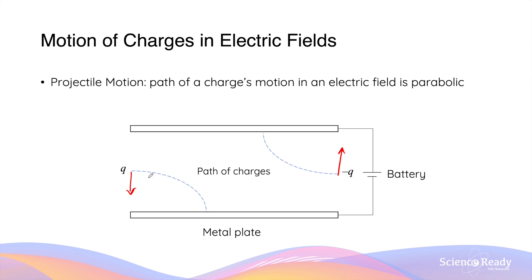This is because the horizontal velocity of both charges — whether moving towards the right or towards the left — remains constant in the absence of any forces, while the vertical velocities, or the vertical components of the velocities, will change due to the forces of the electric field.